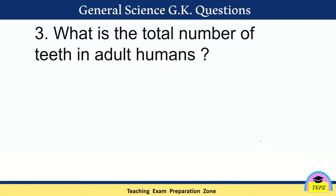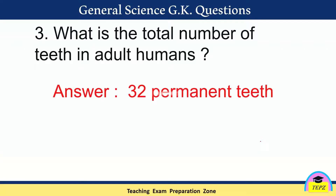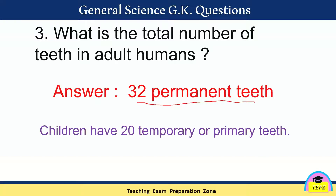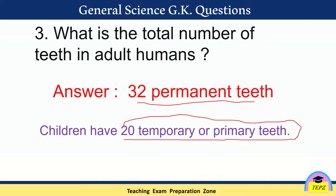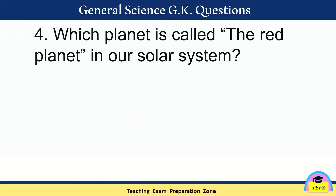Third question: what is the total number of teeth in adult humans? The answer is 32 permanent teeth. Adults have 32 permanent teeth. Children have 20 temporary or primary teeth, also called milk teeth.